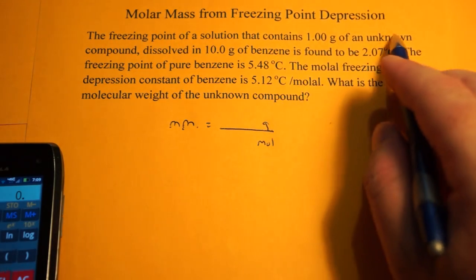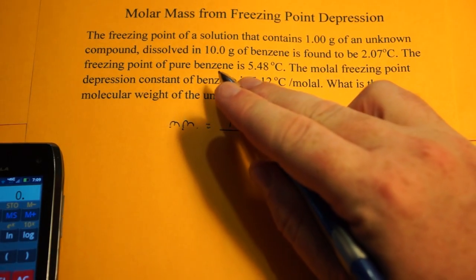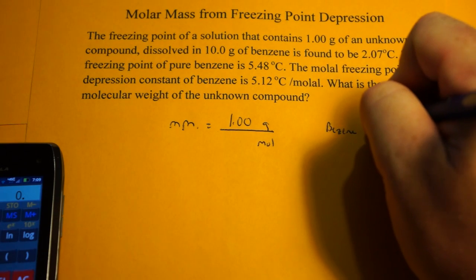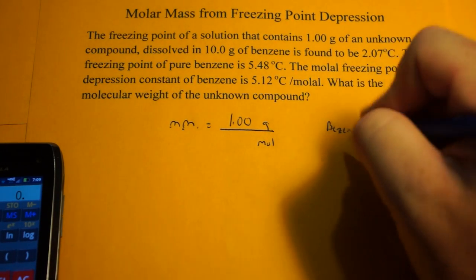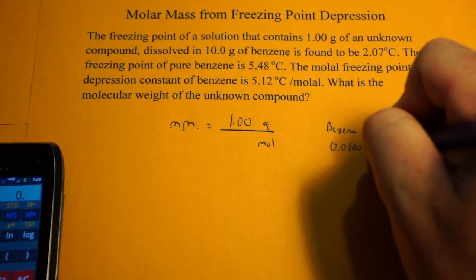Freezing point of a solution that contains one gram of unknown compound. So there's our grams, dissolved in 10 grams of benzene. So that's going to be our solvent, 10 grams. We're going to need that in kilograms, so it's 0.0100 kilograms.